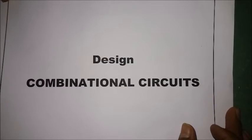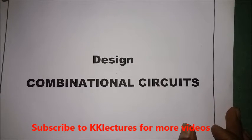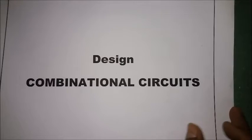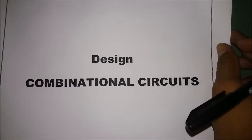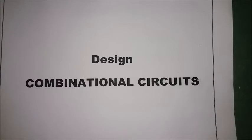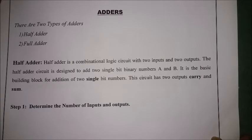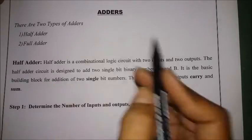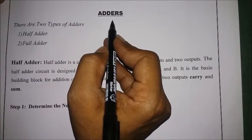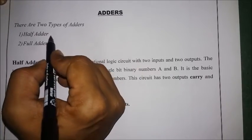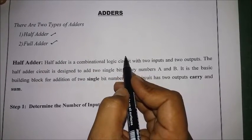In this lecture we are going to cover the designing of combinational circuits. As in my previous lecture I was talking about the designing procedure of combinational circuits and gave some examples. Now we will see how to design based on the designing procedures. The first combinational circuit we have here is the adder. An adder adds two bits or three bits, and based on the summation it has two types: the half adder and the full adder.